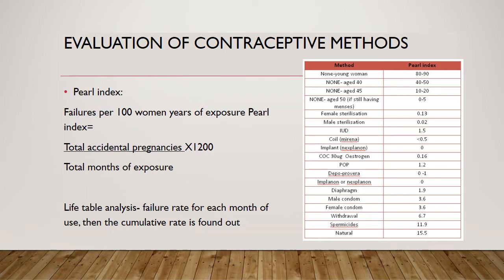Clinical trials typically report their failure rates either by the Pearl index or life table analysis. The Pearl index is defined as the number of contraceptive failures per 100 women-years of exposure, using as the denominator the total months or cycles of exposure from initiation to end of study or discontinuation. The life table analysis provides contraceptive failure rates for each month of use and can provide a cumulative failure rate for any specific length of exposure.